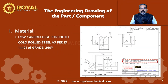The power screw support bracket of a car scissor jack is made of low carbon, high strength, cold rolled steel as per Indian Standard 14491 grade 260Y. This information is available on the engineering drawing. However, to find out the mechanical properties of this material we will have to refer to the Indian Standard document.